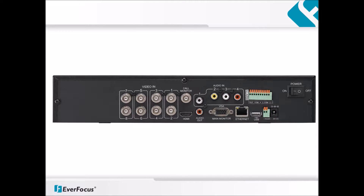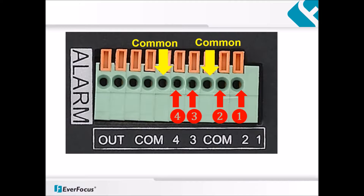The DVR has alarm inputs. These can act as a switch to activate the DVR to start recording once the input has been triggered. In the example above, this device has four alarm inputs and two common inputs. These are dry contact. The software of the DVR can set these inputs to either behave as normally open or normally closed.